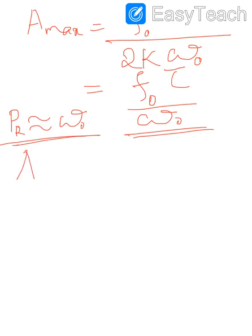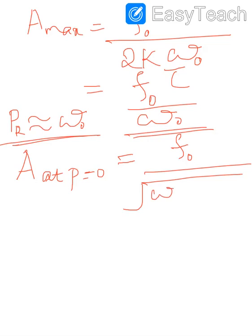We also evaluate the amplitude at p = 0. Substituting p = 0: the term (ω₀² − p²)² becomes ω₀⁴ and the term 4k²p² becomes 0. Therefore, the amplitude at p = 0 is: a(p=0) = f₀ / √(ω₀⁴) = f₀ / ω₀².